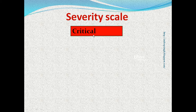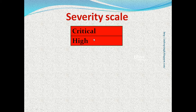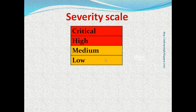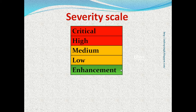The severity scale consists of different severity levels like critical — this means showstopper, or bugs that block other bugs. Examples of bugs that have critical severity are: the application does not start, the application crashes in certain situations, or the user data gets lost. The severity value can also be high, medium, or low, or the bug report may just be a request to enhance the system.